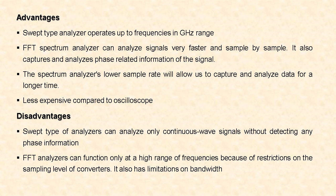Let us see the advantages of spectrum analyzers. Swept-type spectrum analyzers are used to analyze frequencies in the range of gigahertz. FFT spectrum analyzers are used to analyze signals very fast, even sample by sample. FFT analyzers also give phase-related information of the signal. Spectrum analyzers have a lower sample rate, so we can easily capture and analyze data for a longer time. They are less expensive compared to an oscilloscope.